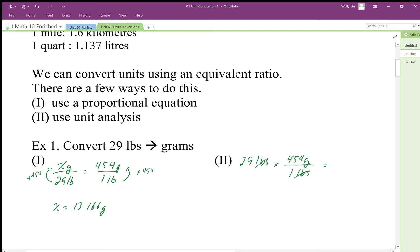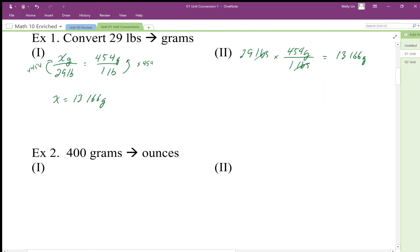Notice that our units work out to be grams, because that's the units that's left over. This is rate analysis or unit analysis. Same thing here—we can convert to ounces.